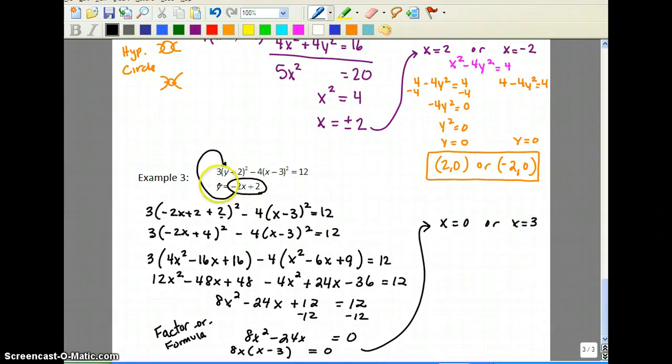Now plug into one of these. Well I'm going to pick that bottom one because that's easier. Negative 2x plus 2. If x is 0, then y would be 2. So you get 0, 2. If x is 3, you get y equals negative 6 plus 2. y would be negative 4. So 3, negative 4.